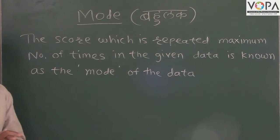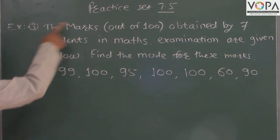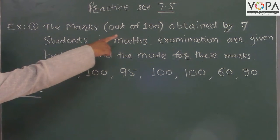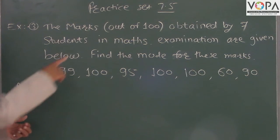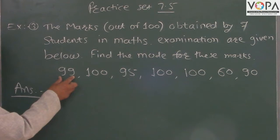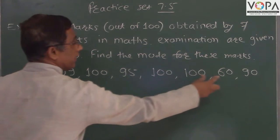Now we take example number 3, practice set 7.5. The marks out of 100 obtained by 7 students in mathematics examination are given below. Find the mode for these marks: 99, 100, 95, 100, 100, 60, and 90.